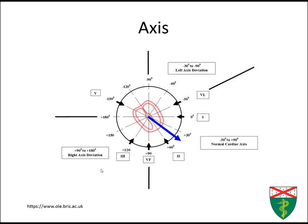Next we look at axis, specifically the QRS axis. Normally the summation of vectors from the left and right ventricle is approximately 60 degrees, producing a positive R-wave in lead 2. If the summation of vectors is between negative 30 and positive 90 degrees, that's a normal axis. Left of negative 30 degrees (negative 30 to negative 90) is left axis deviation. Right of positive 90 (positive 90 to positive 180) is right axis deviation. Between 180 and negative 90 is an extreme axis.